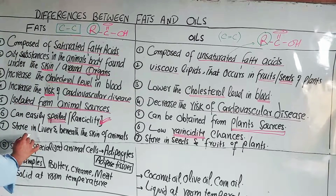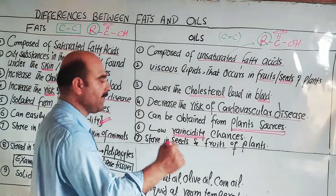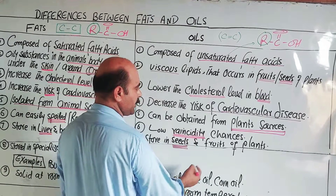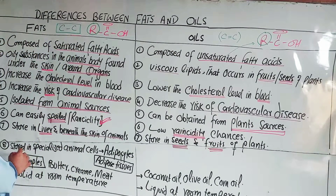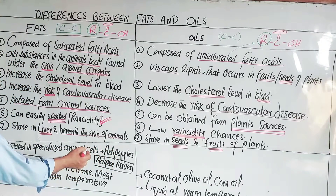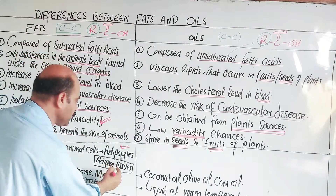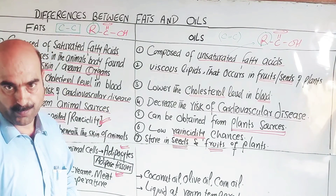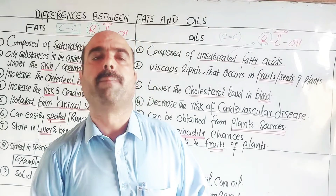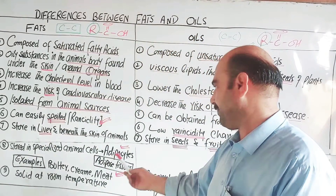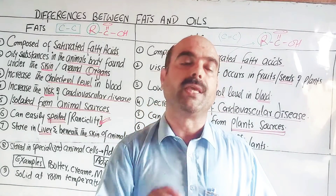Fats are stored in the liver and beneath the skin of animals. In plants, oils are stored in seeds and fruits. In animals, fats are stored in specialized cells called adipocytes. A group of adipocytes forms adipose tissue. The adipocytes store fat within the body for energy reserves.